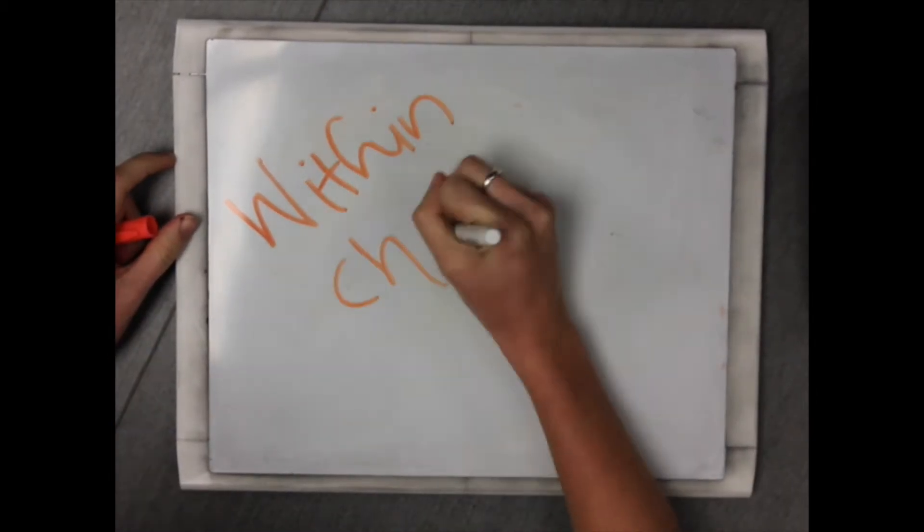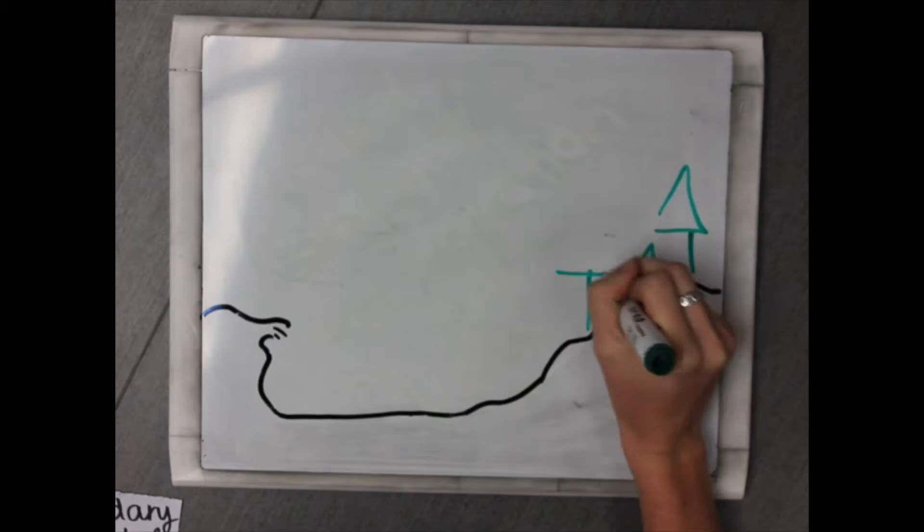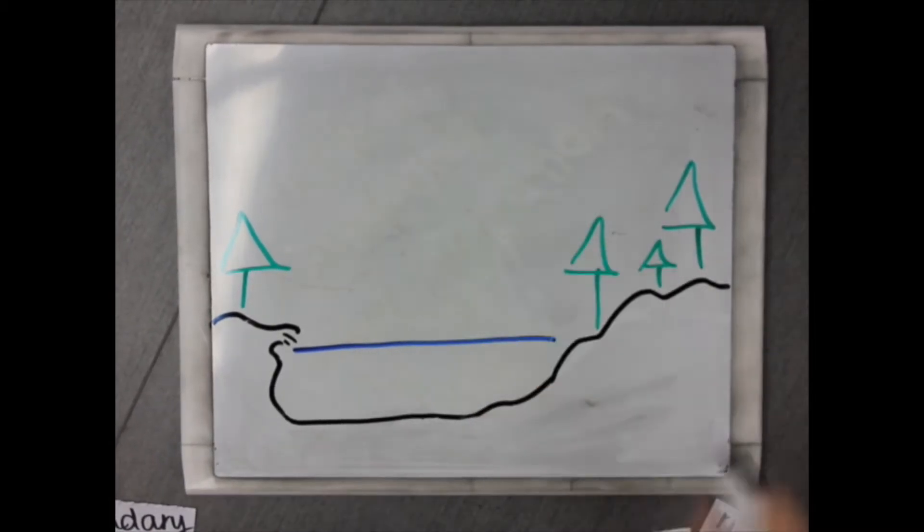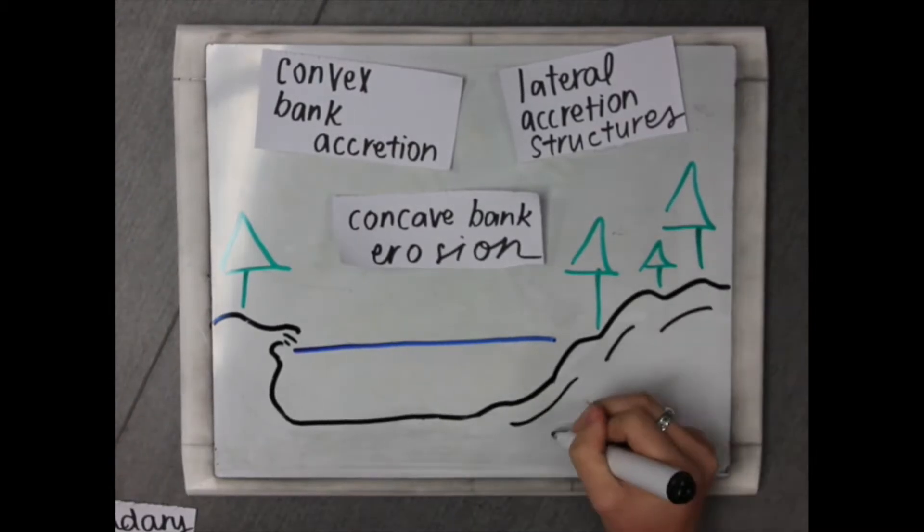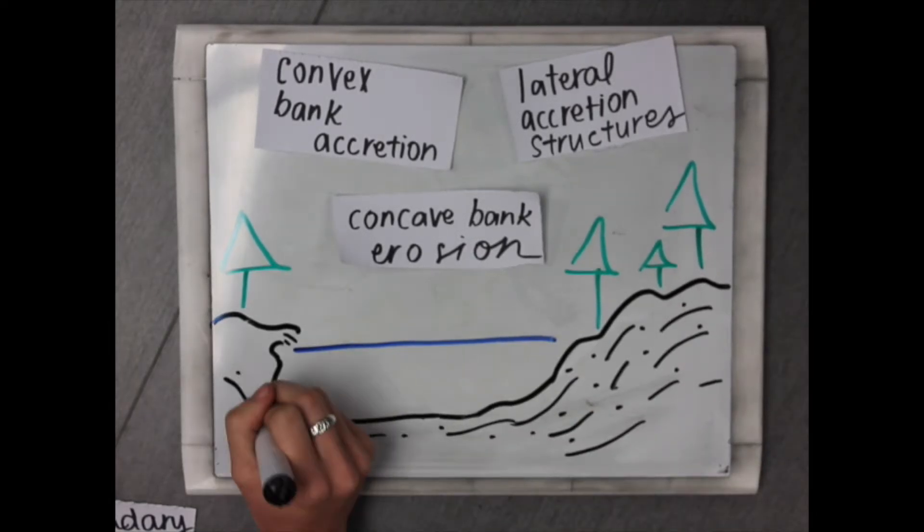Within channel accretion is a combination of several processes. First off, we have primary channels shifting to allow stabilisation of past active braid bar areas and riverbeds.